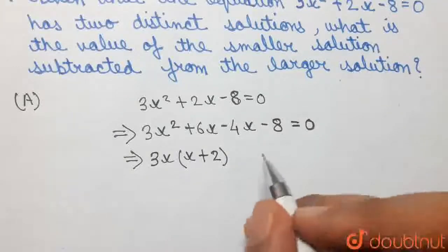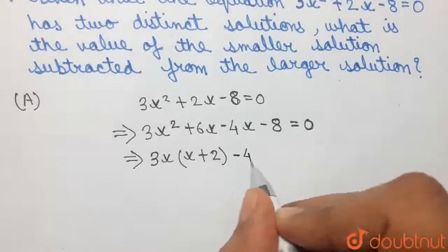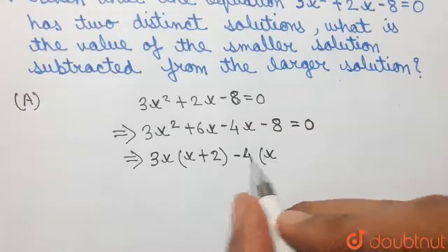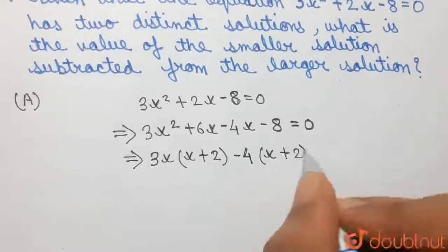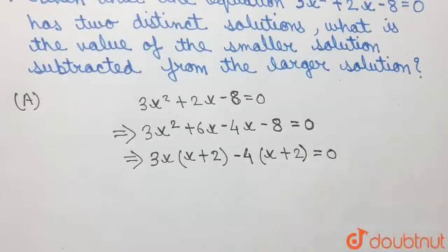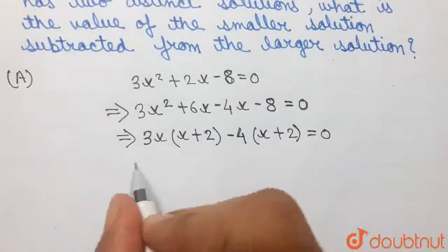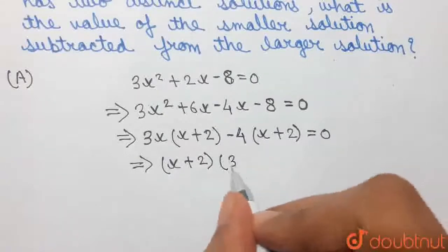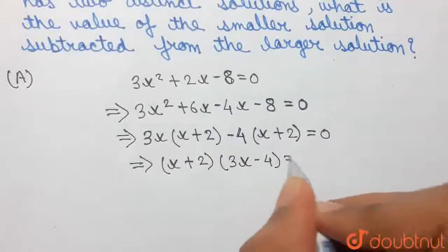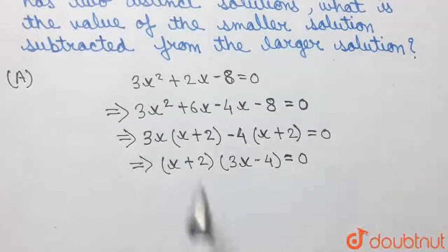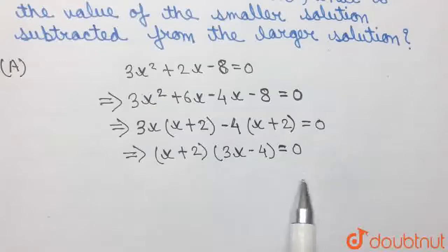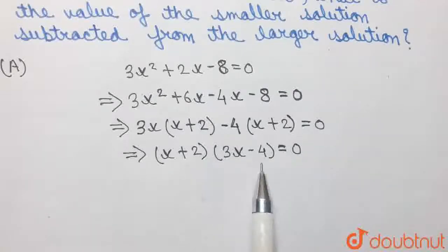Similarly, in the third and fourth terms we can take minus 4 common from both the terms, so that from this term we have x remaining whereas from this term we have plus 2 remaining. This expression equals 0. Now taking x plus 2 common in the left hand side of the equation, we can write x plus 2 into 3x minus 4 is equal to 0. So we have completed the factorization of the quadratic equation.